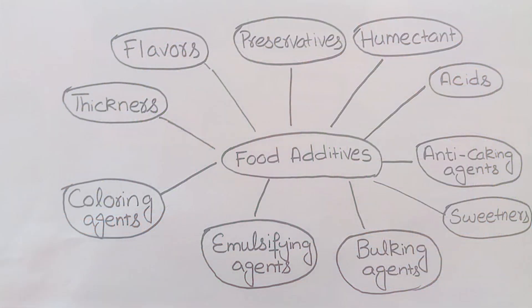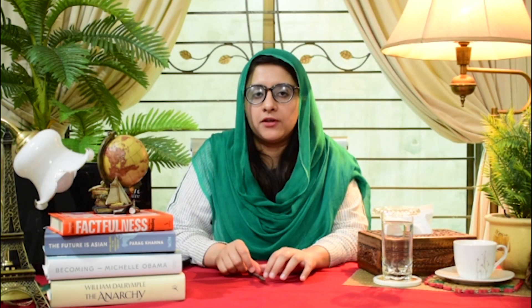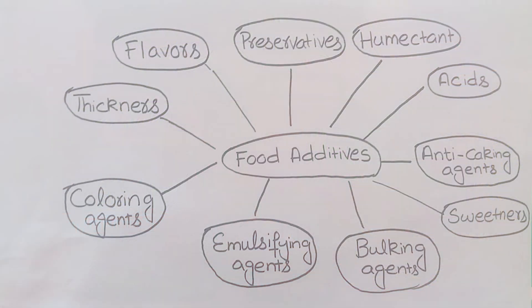Now we will look at Anti-Caking Agents. Anti-caking agents are used in food products that are in powder form so that they don't clump together or form cake-like or rock-like masses. For example, in everyday flour or cornflour and similar products, we use anti-caking agents. An example is Sodium Bicarbonate, or Baking Soda.